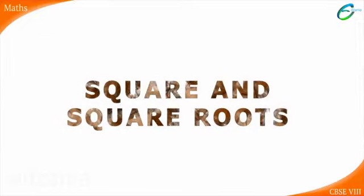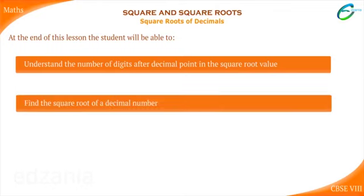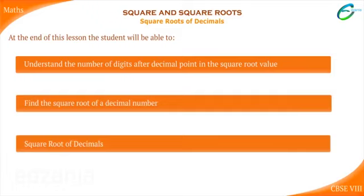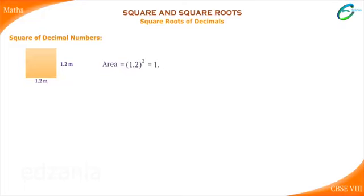Square and Square Roots. Here we have a square-shaped land whose side is 1.2 meters. What would be the area of this land? Area is equal to 1.2 the whole square, which is equal to 1.2 into 1.2, that is equal to 1.44 meter square.